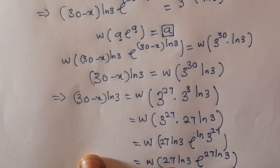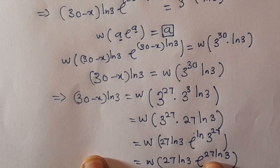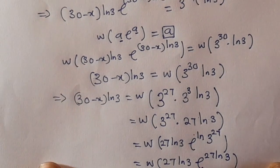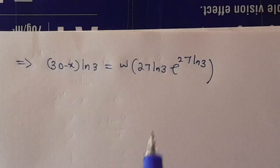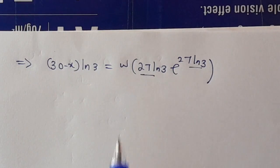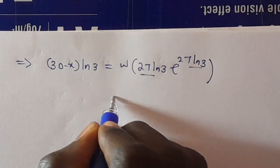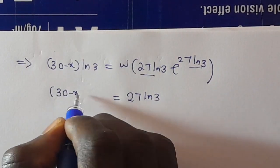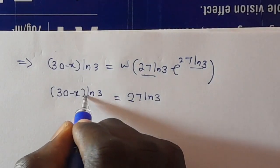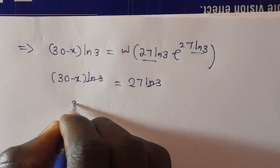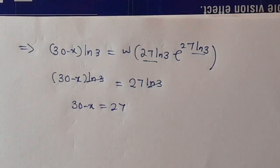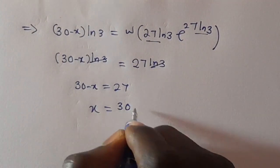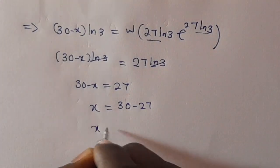We have the base 27 ln3 equal to the power 27 ln3, and by applying the W Lambert function, W of (30 minus x) ln3 times e raised to the power (30 minus x) ln3 equals W of 3 raised to the power 30 times ln3. This gives us (30 minus x) ln3 equals 27 ln3. The ln3 cancels, then we have 30 minus x equals 27, and therefore x equals 30 minus 27, so x equals 3.